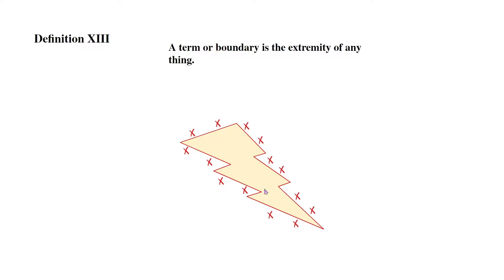Now over here we have a lightning bolt figure, and the lines, the extremities, are these red lines. Now anything outside of that is not part of the figure. It's a boundary. The figure can't go past those lines.